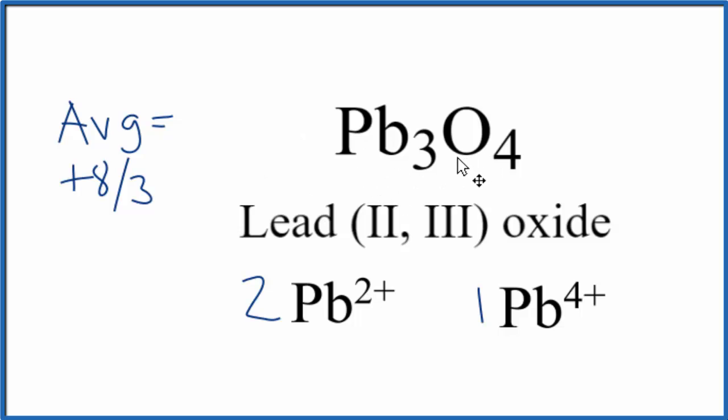So to sum up, Pb₃O₄, the average oxidation number is positive 8 thirds - this is probably what your teachers are asking you to do in a general chemistry context - but there's a little bit more to the story here because Pb₃O₄ has Pb²⁺ and Pb⁴⁺ ions in the compound.